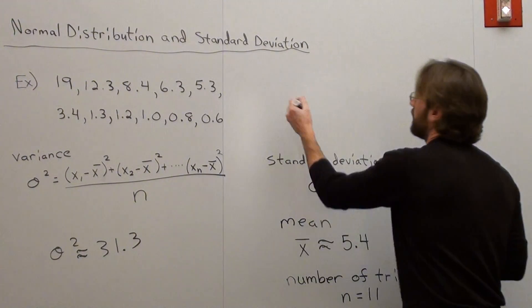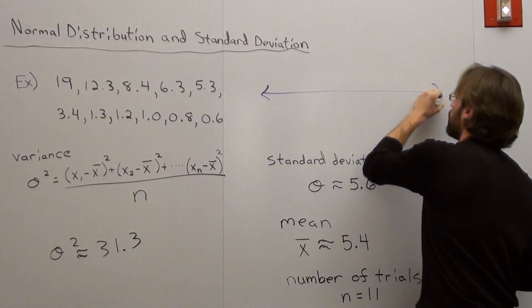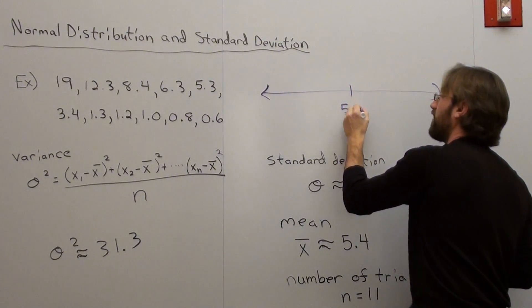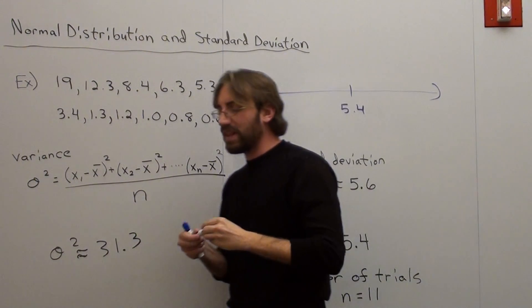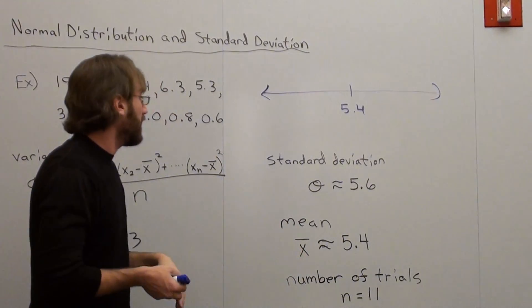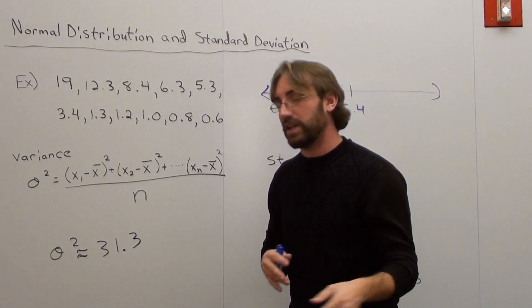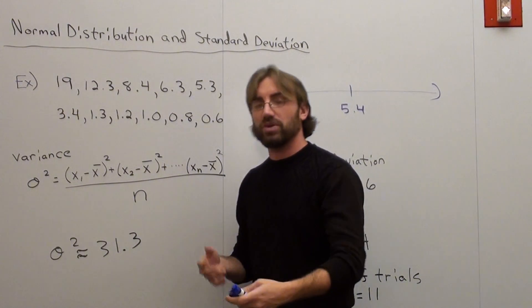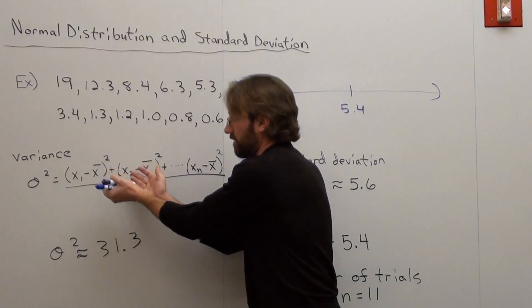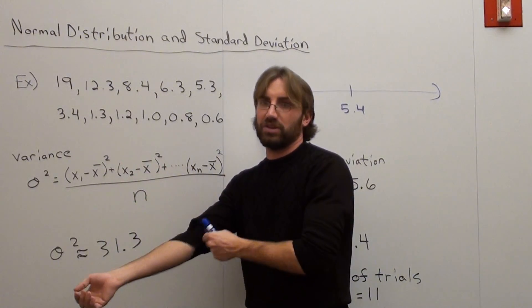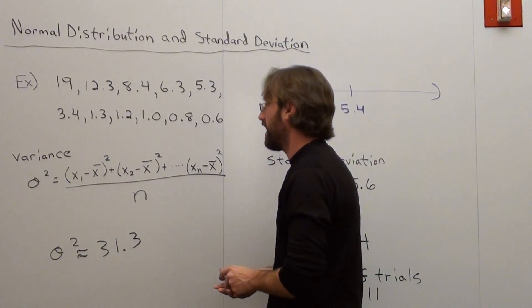Now what that means is this: if I were to draw some sort of line, my mean is about 5.4 away. That's just the middle of everything. What I've got to then do is figure out the variance, how everything fluctuates, and then from there go to the standard deviation. Your variance is always going to be positive because you're always taking a square of it.